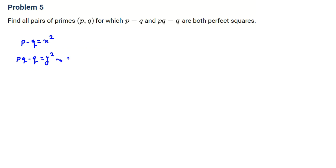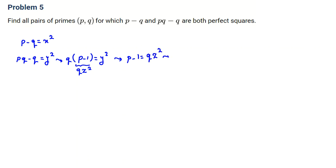From the second equation, we know Q times (P minus 1) equals Y squared. So P minus 1 should be Q times Z squared, because Q is prime. So here we should have Q, and then Q squared times Z squared equals Y squared. We conclude P minus 1 equals QZ squared, or equivalently P equals QZ squared plus 1.